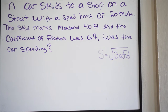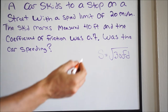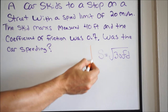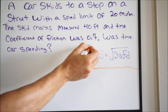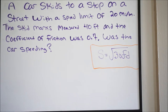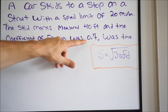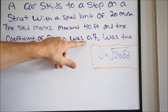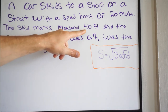We know that the speed limit on that street was 20 miles per hour. We have this formula that we can use to calculate this — it came from the last problem and we're carrying it over. What this formula calculates is the speed of the driver based on the coefficient of friction and the distance measured of the skid mark.